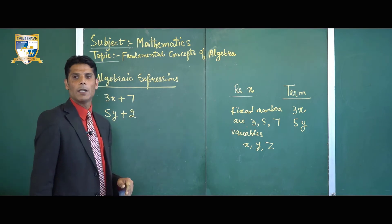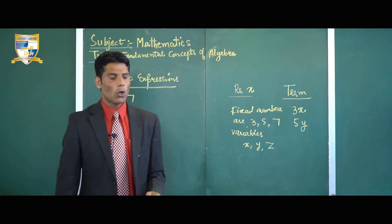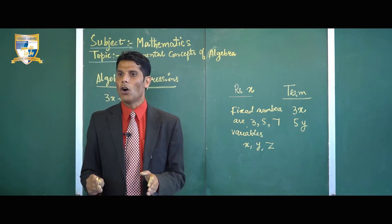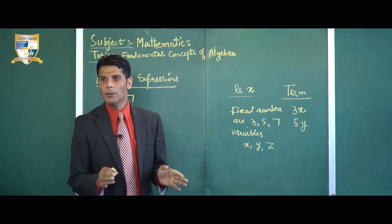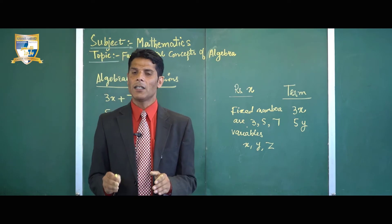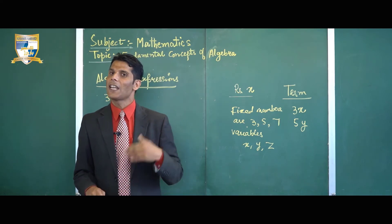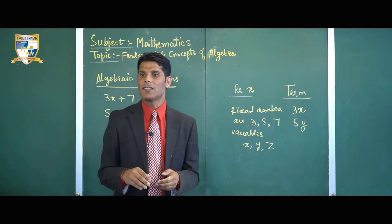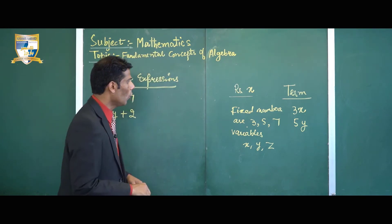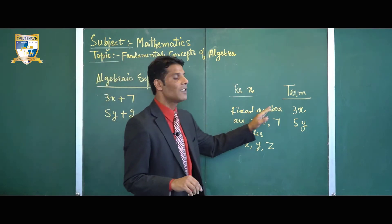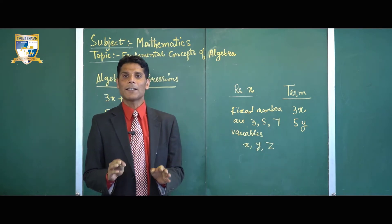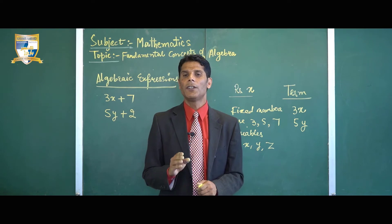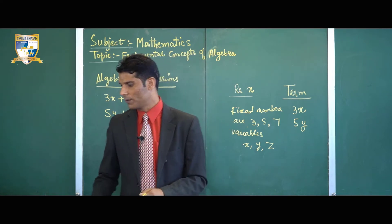An algebraic expression is a combination of terms under different mathematical operations like addition, subtraction, division, and multiplication. On the basis of the number of terms, algebraic expressions have been divided into three different groups.